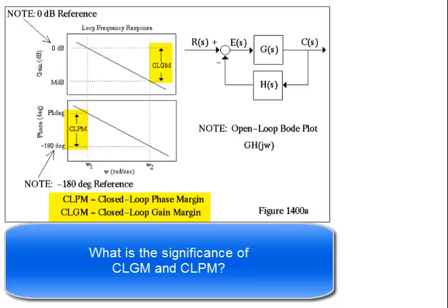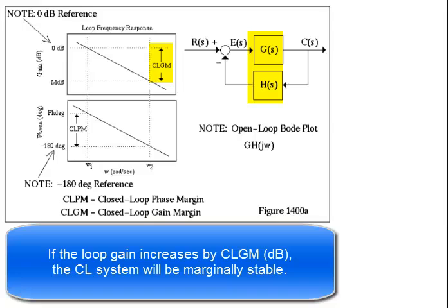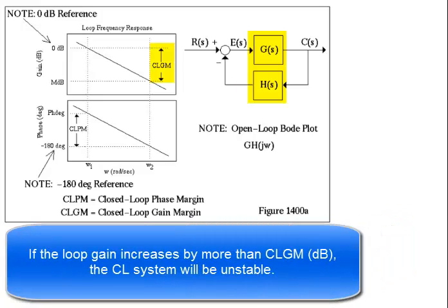What is the significance of closed-loop gain margin and closed-loop phase margin? If the loop gain increases by the closed-loop gain margin, the closed-loop system will be marginally stable. If the gain increases by more than the closed-loop gain margin, the system will be unstable.